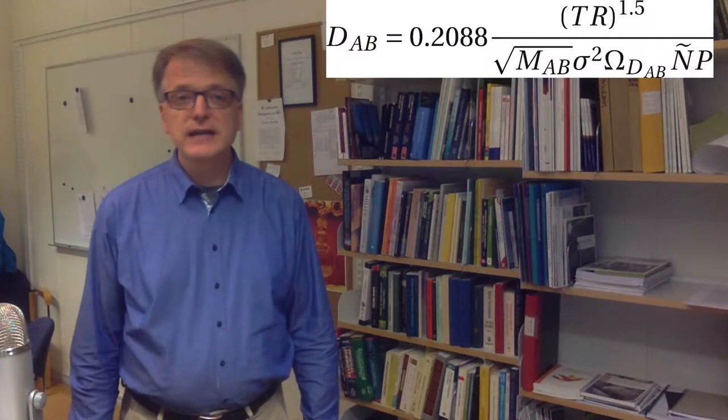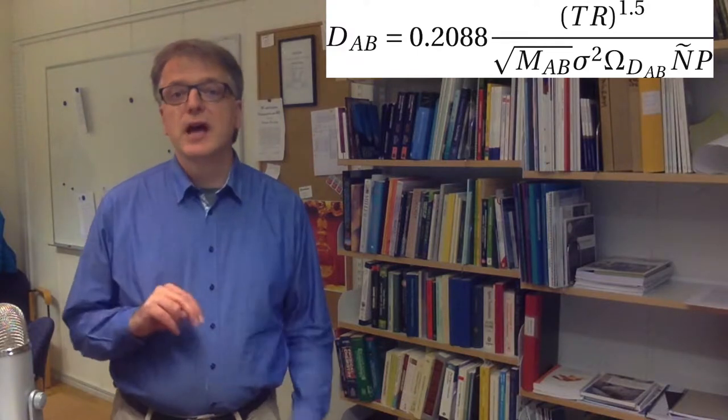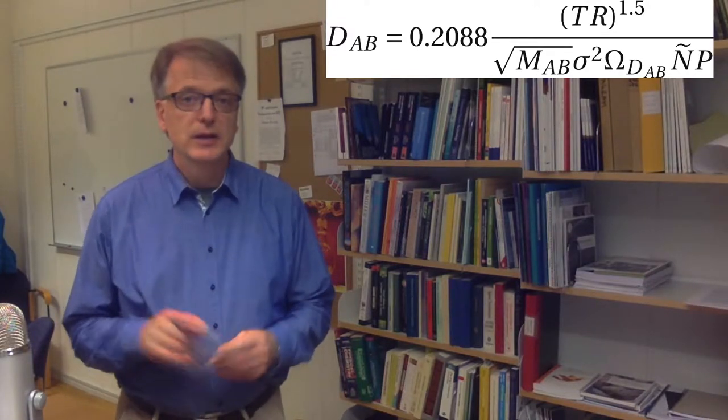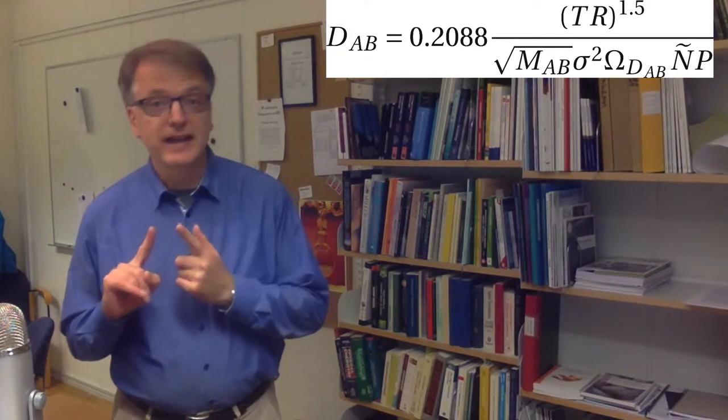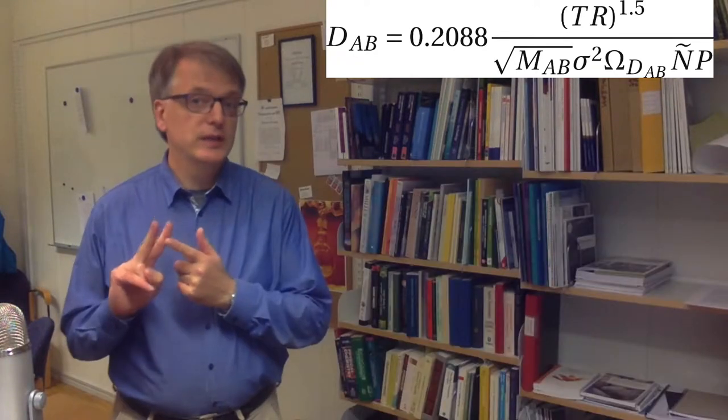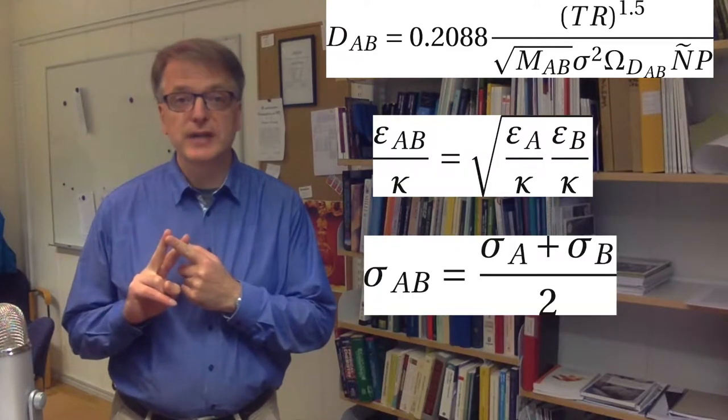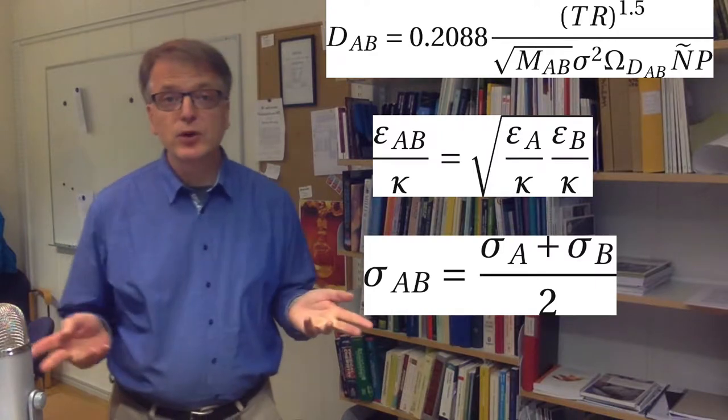To use this advanced model for estimating mass diffusivity in gases, you need two things that are not commonly available. You need the characteristic energy and you need the characteristic collision diameter. What if you don't have those?